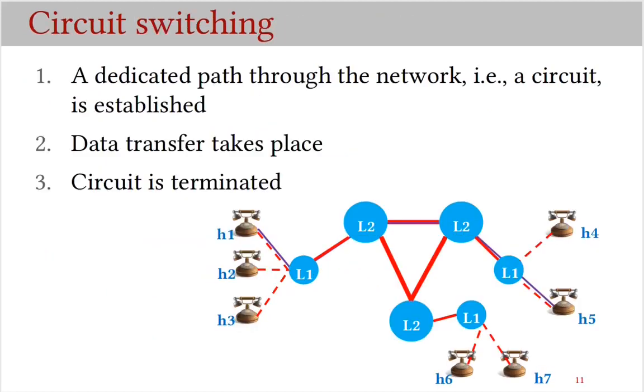Circuit switching is a mechanism for connecting two nodes. It is used in telephone networks. Circuit switching involves these three steps. First, a dedicated path through the network is established. This path is called circuit. Then, data transfer takes place until completion, and lastly, the circuit is terminated.